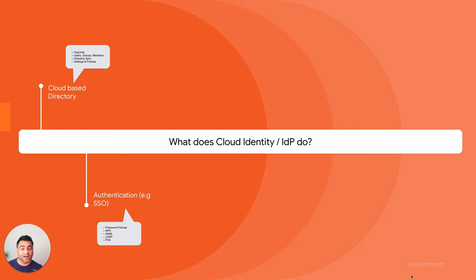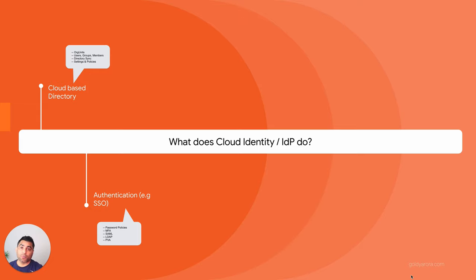For LDAP applications that are hooked up with your LDAP or Active Directory for authentication and authorization, you can now call Google Cloud Directory as your directory in an LDAP-as-a-service fashion. Instead of hooking your LDAP-based applications with Active Directory or OpenLDAP, you can hook them up with your Google Cloud directory via a utility called Secure LDAP.